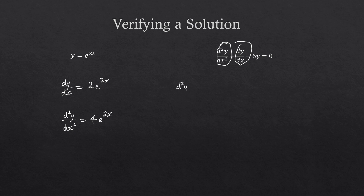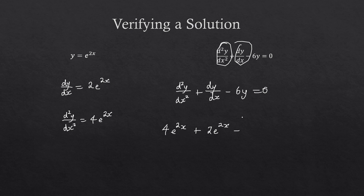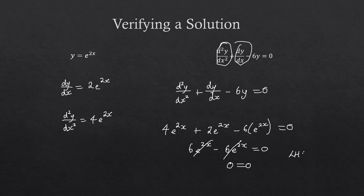So the second derivative plus the first derivative minus 6 lots of y should equal 0. Substituting in, I have 4e to the 2x plus the first derivative 2e to the 2x, minus 6 times e to the 2x. I can see I'm going to have 6e to the 2x minus 6e to the 2x equals 0 — those cancel out, so I get 0 equals 0. So the left-hand side equals the right-hand side, and that one is proven as well.